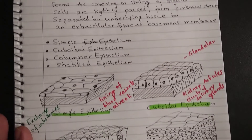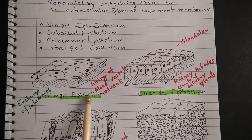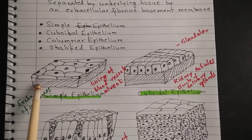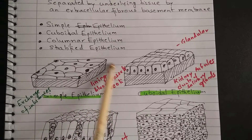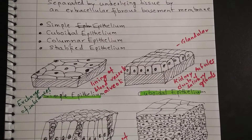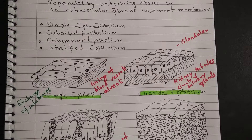Let us understand them one by one. Number one is simple epithelium. In simple epithelium, there is a basement membrane and a single layer of cells — so it is a thin layer. Simple epithelium is found in the lining of blood vessels, the lining of alveoli, and the lining of the buccal cavity. Simple epithelium facilitates exchange of substances. For example, certain medicines are easily absorbed when kept sublingually, that is, below the tongue.